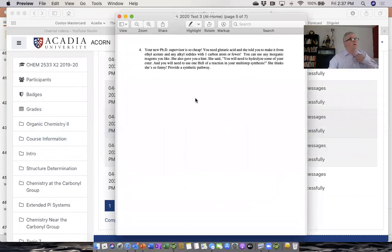And number four, simply make glutaric acid using ethyl acetate. You were given a few hints. You can use any alkyl iodides with one carbon atom or fewer. You can use any inorganic reagents you like. You will need to hydrolyze some of your ester and you will need to use one Hell of a reaction in your multi-step synthesis. So there was a number of hints there I was trying to help you out with.